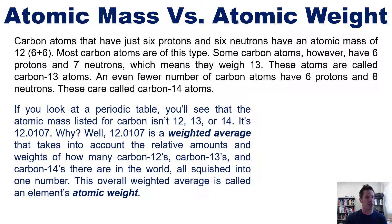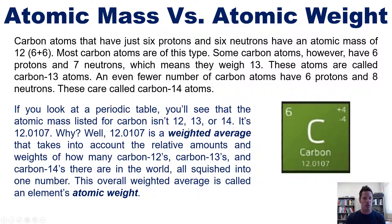So if you look at the periodic table closely, you'll see that the atomic mass listed for carbon is not 12 or 13 or 14. It's this number, 12.0107. You might ask, why? What does that number mean? Well, as it turns out, this number 12.0107 is a weighted average that takes into account the relative amounts or percentages and weights of how many carbon 12s, carbon 13s, and carbon 14s there are in the world and universe, all squished into one number.